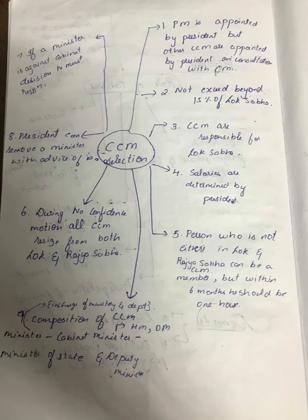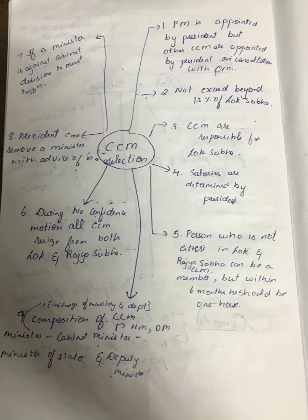To quickly summarize: in CCM, the PM is appointed by the president, but the president appoints all CCM members. It should not exceed beyond 15% of the Lok Sabha. All CCM members are responsible to the Lok Sabha. Salaries are determined by the parliament. A person not in either house has six months to enter. During no confidence motion, all must resign. If a member is against a cabinet decision, they must resign. The president can remove any minister with the advice of the prime minister. The composition includes cabinet ministers like health minister, defense minister, and minister of state.